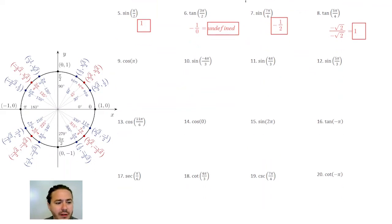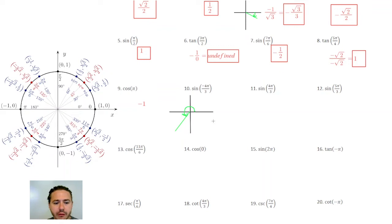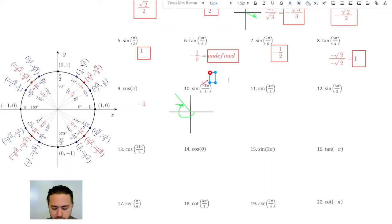Cosine of π is going to be the x-coordinate at π, and so that's going to be negative 1. For sine of negative 4π over 3, I'll draw a diagram to help visualize where that terminal side is. Positive 4π over 3 is in quadrant 3. Negative 4π over 3, if I reflect that over the x-axis, will be in quadrant 2, and it'll be coterminal to 2π over 3.